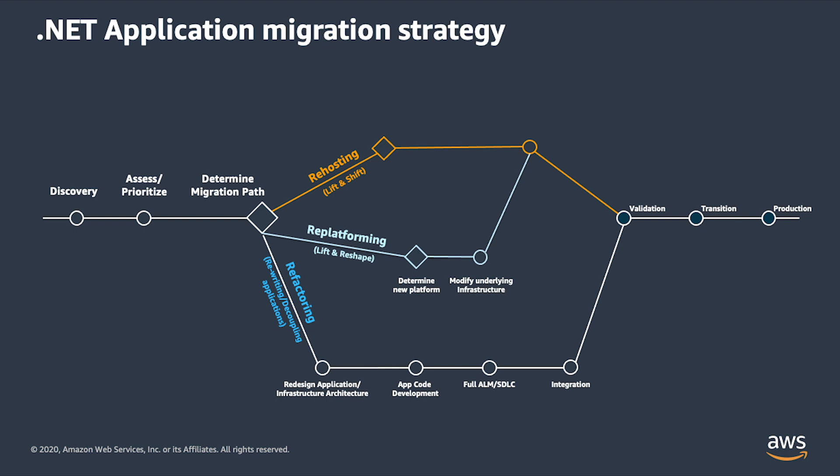The last strategy is refactor — changing the way the application is architected and developed, usually done by employing cloud-native features. Typically this is driven by a strong business need to add features, scale, or improve performance that would otherwise be difficult to achieve in the application's existing environment. If your organization is looking to boost agility or improve business continuity, it is worth pursuing, even though it is often the most expensive solution. There should be a careful comparison of the additional value and effort before choosing whether an application should go through a complete refactoring.